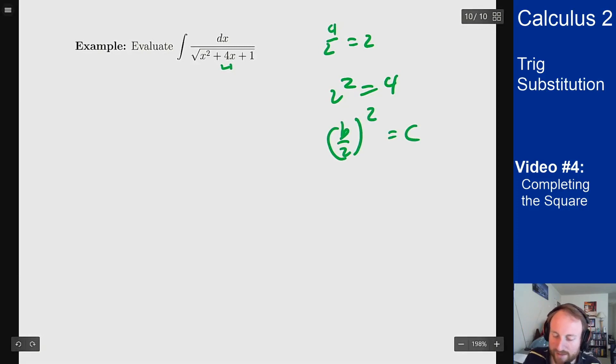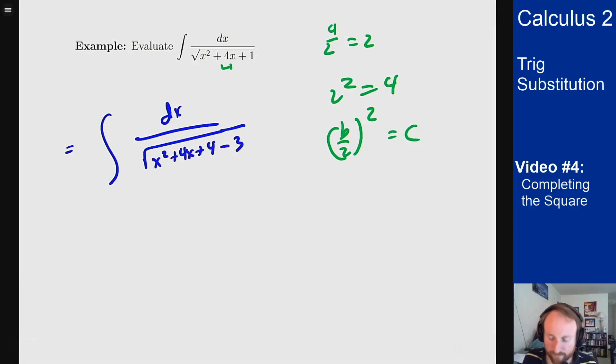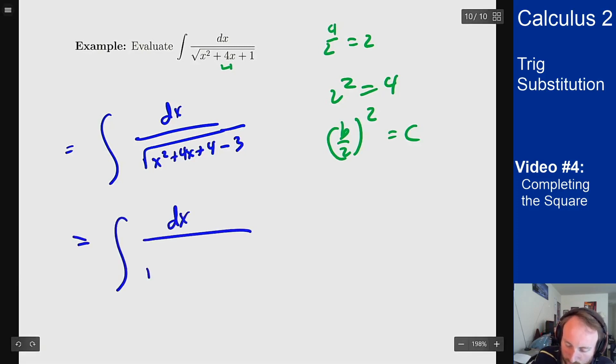It's b over 2 squared needs to be c to make it a perfect square. So I can rewrite this expression as an integral of dx over square root x squared plus 4x plus 4 and then minus 3 makes it still be a plus 1 down there. Or you do it differently, write this as minus 4 plus 1, but you'll get the 3 at the end anyway. So this is integral dx over root x plus 2 quantity squared minus 3.